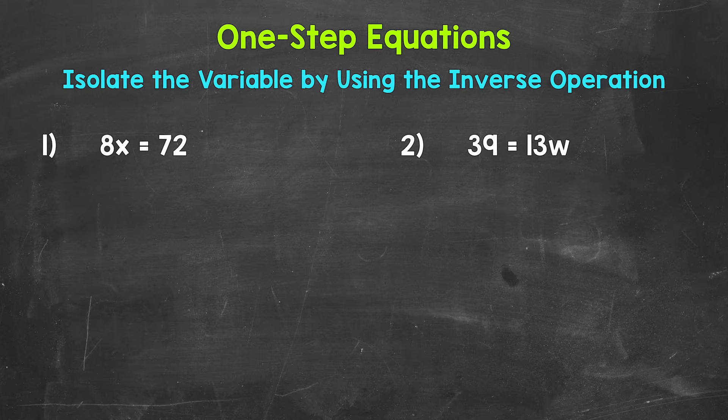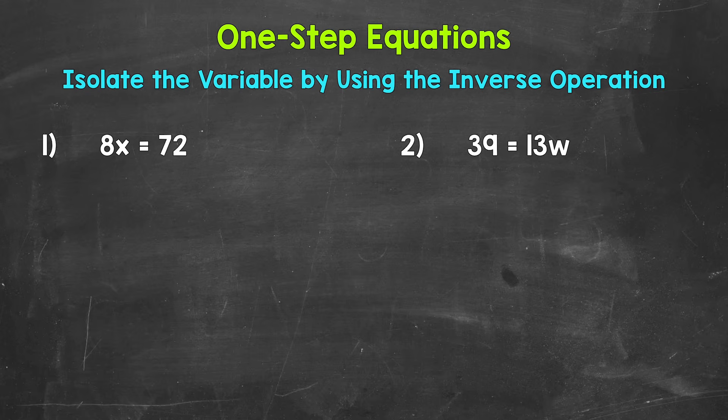When we solve one-step equations, we want to isolate the variable, which means get it by itself. Basically, we want to undo whatever is being done to the variable. That way, the variable is by itself on one side of the equation. We do this by using the inverse or opposite operation. Keep in mind, it is very important that whatever is done to one side of the equation, it must be done to the other. That keeps everything balanced and equal.